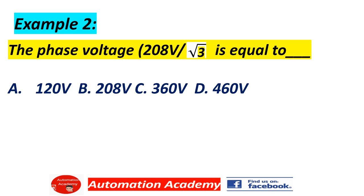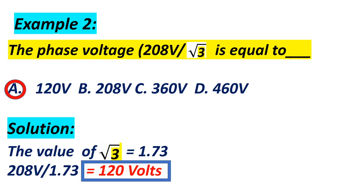Example 2: the phase voltage 208 volts divided by the square root of 3. A) 120 volts, B) 208 volts, C) 360 volts, D) 460 volts. Answer: A, 120 volts. Solution: the value of √3 is 1.73, so 208 volts divided by 1.73 equals 120 volts.